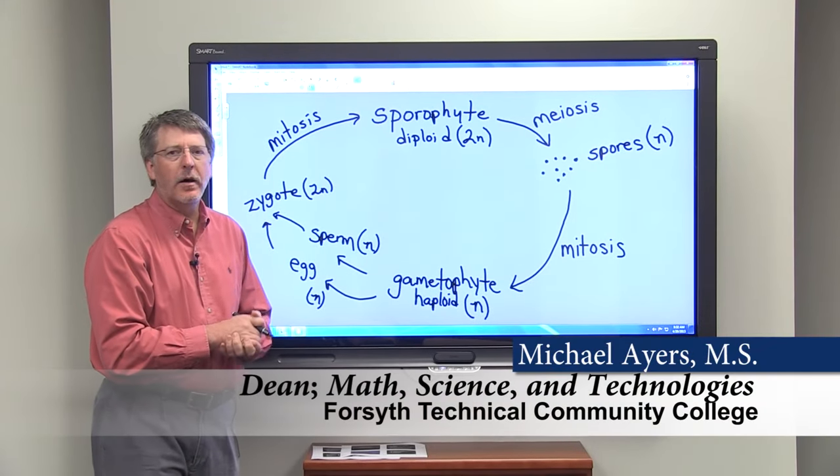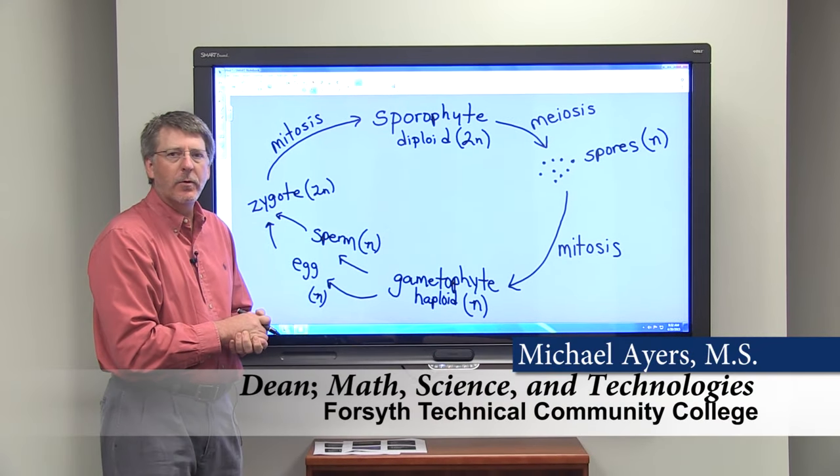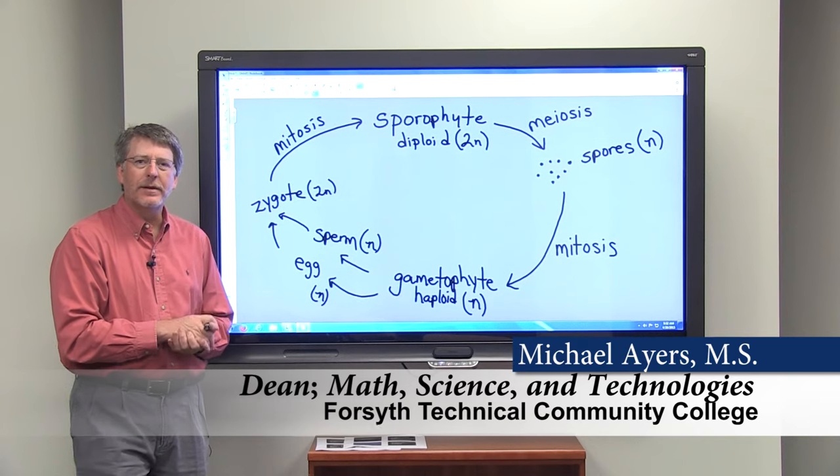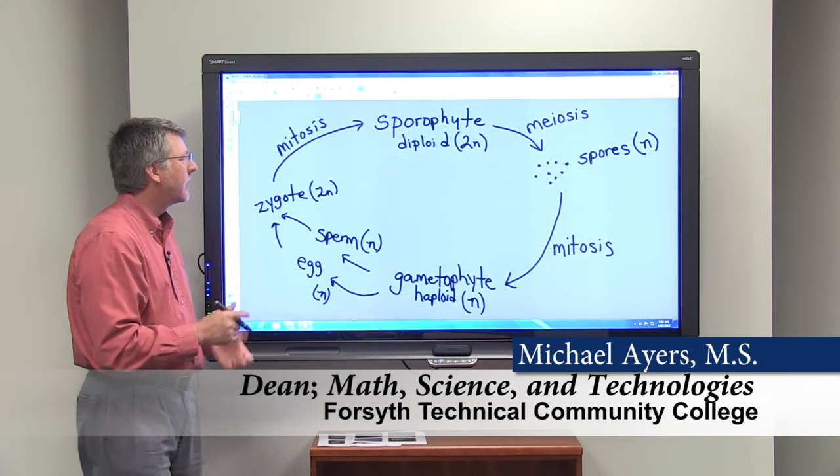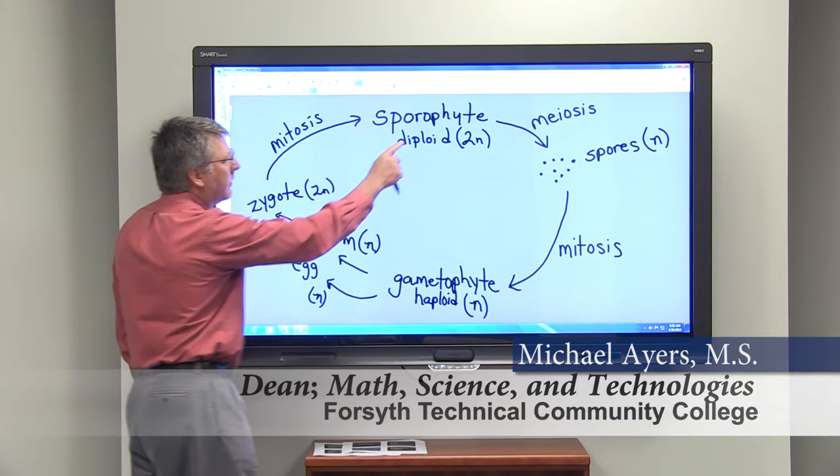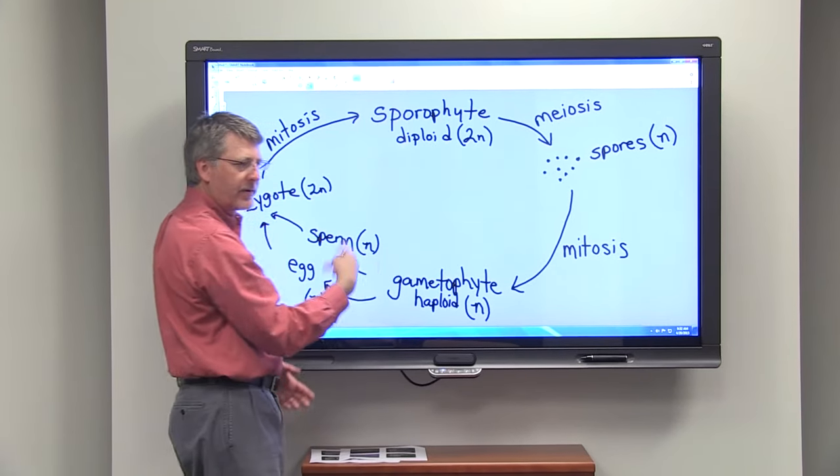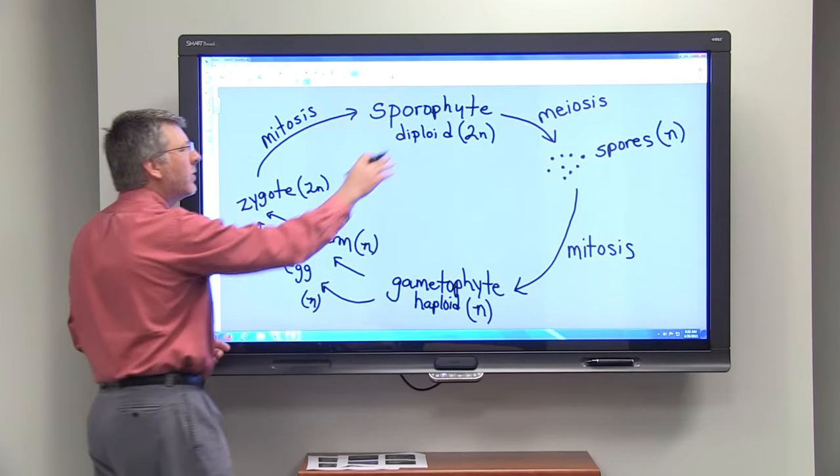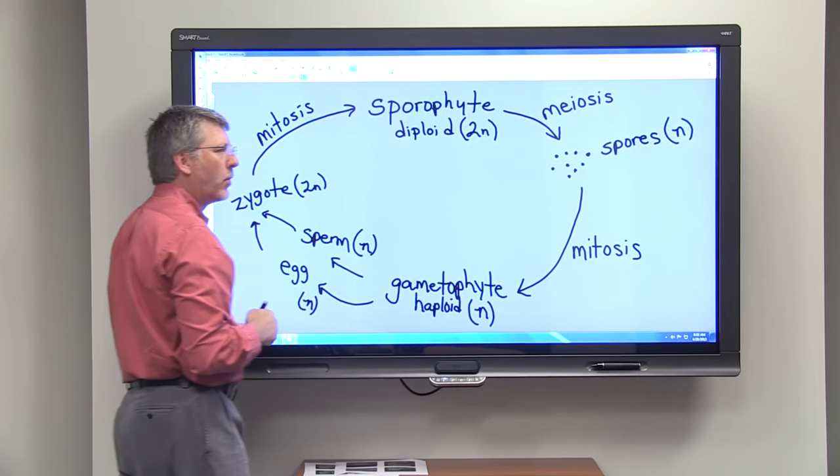So let's look at alternation of generations in more detail and see where the different types of cell division occur. It's a life cycle so where we start is really arbitrary, but we'll just start with the sporophyte generation.